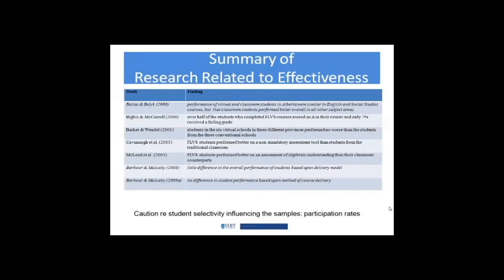There's a real influence of student selectivity — it influences participation in the samples, in the programs, and participation rates in general. For example, in the early days some students would have selected online because they thought it would be easier, or that they could get through it quicker without doing a lot of work. So you have to take that into consideration when looking across effectiveness research to see what kinds of trends are coming out.